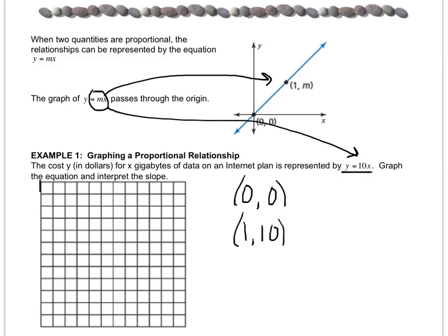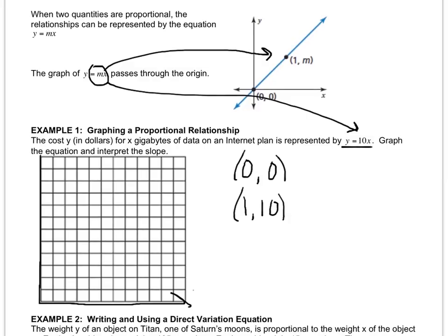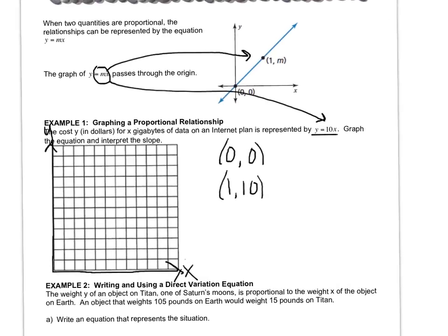Since I'm not graphing any negatives, I'm going to make a big first quadrant. Hopefully you're using a ruler. Now I graph the points, so let's graph zero zero and one ten, connect them. Hopefully again you have a ruler. I wrote y equals 10x on the line.